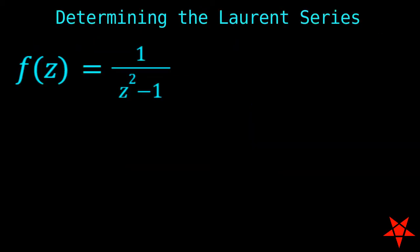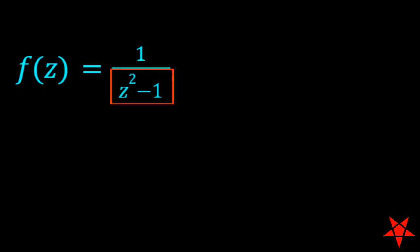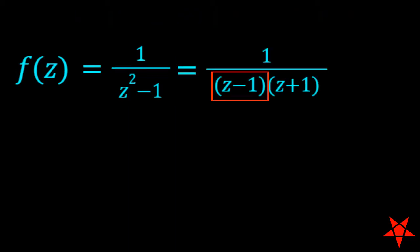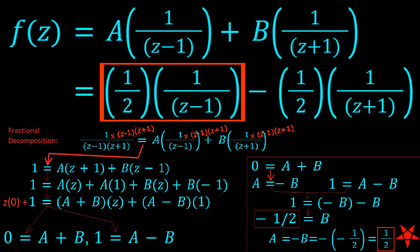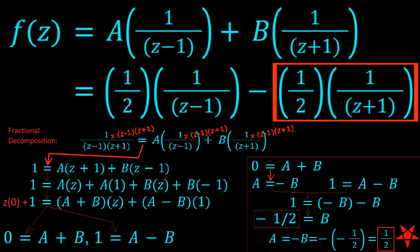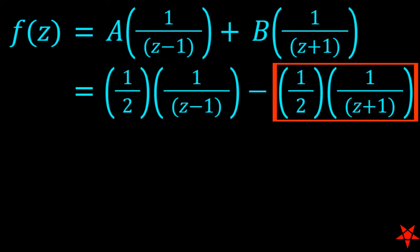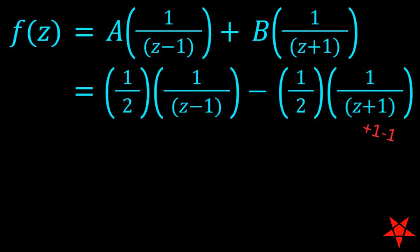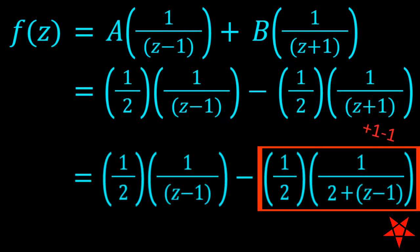We begin by breaking down the second order polynomial located in the denominator into z minus 1 and z plus 1 terms before applying fractional decomposition to get half times 1 over z minus 1 minus half 1 over z plus 1. The negative half z plus 1 term needs to be converted into something compatible with the Laurent series that we desire. So we now use addition and subtraction to create a z minus 1 term in the denominator.